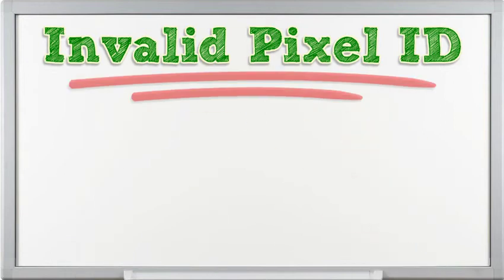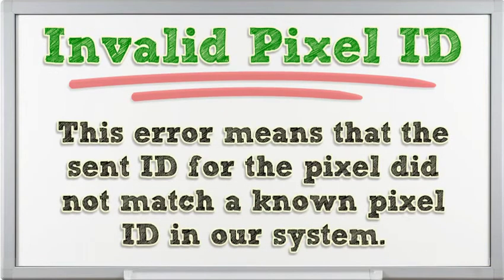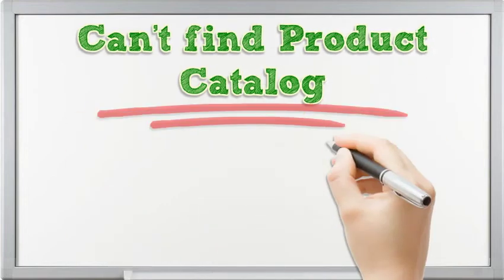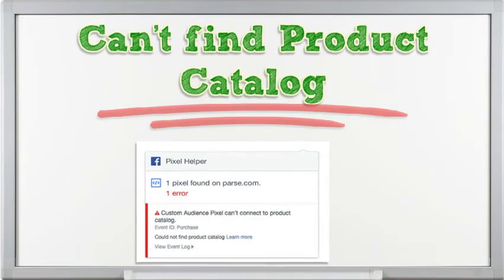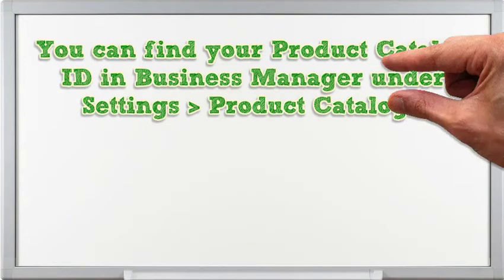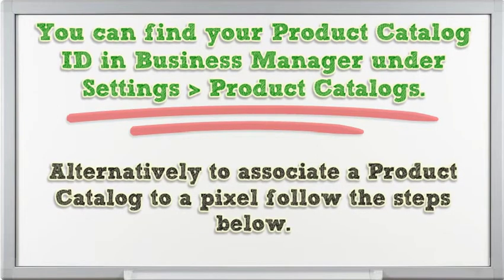Invalid Pixel ID: this error means that the sent ID for the Pixel did not match a known Pixel ID in our system. Can't find Product Catalog: the Product Catalog ID which was passed in the field 'Product Catalog ID' in the Pixel Fire could not be found in our system. You can find your Product Catalog ID in Business Manager under Settings > Product Catalogs. Alternatively, to associate a Product Catalog to a Pixel, follow the steps below.